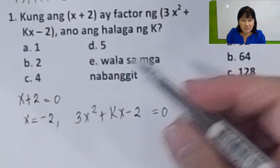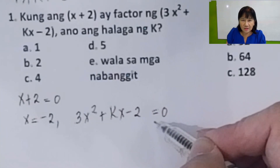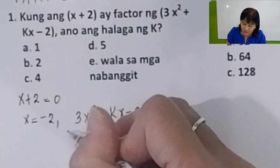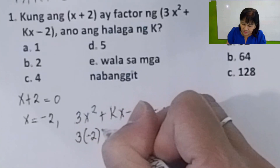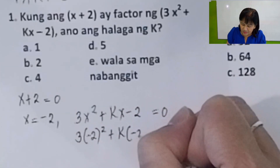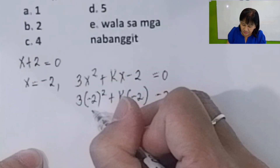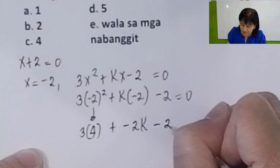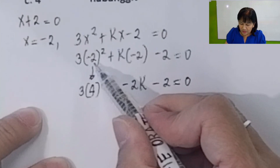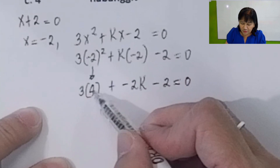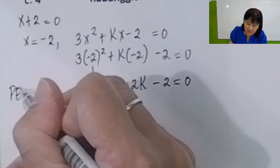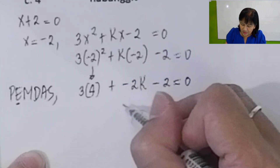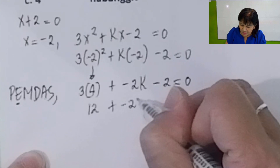Why equals to 0? Because it is a factor. So when you substitute the value of x, which is negative 2, the remainder is equal to 0. You've learned that under polynomial functions. Substitute negative 2 for x. You have 3 times negative 2 squared plus k times negative 2 minus 2 equals 0. This gives you positive 4 times 3 plus negative 2k minus 2 equals 0. Take note that we simplify the exponents first before multiplying because of PEMDAS — exponent before multiplication. Don't ever forget that.